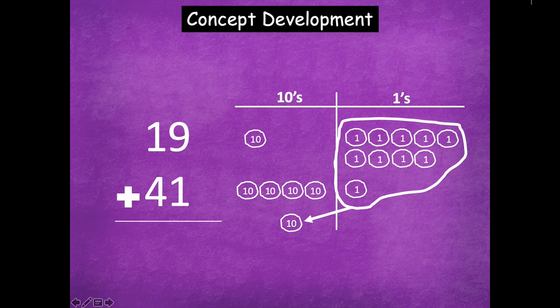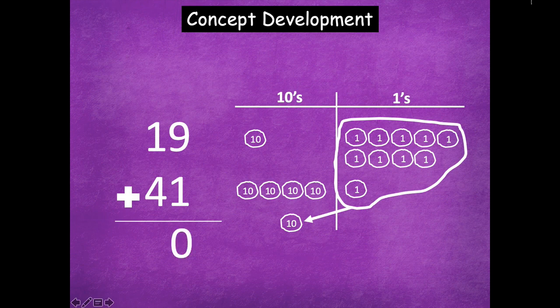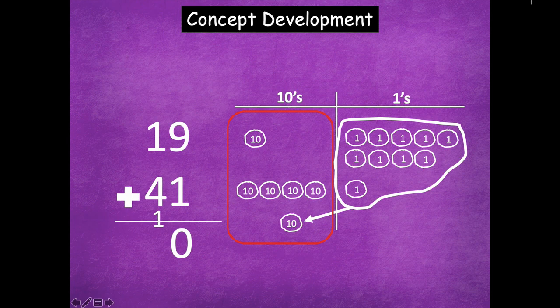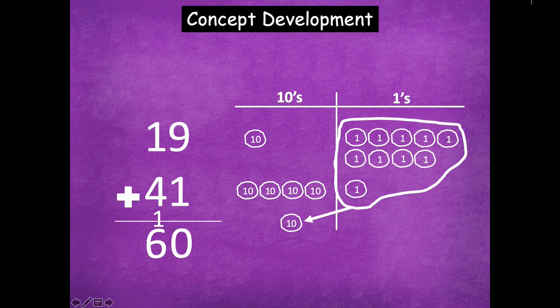So now I'm going to model my place value chart. Well, I don't have any ones anymore. So I put a zero in there, but I made one new 10. So I put that one group of 10 below. So now I add my tens. So one 10 plus four tens plus that extra 10 that I just composed gives me six tens. Okay, so 19 plus 41 equals 60.